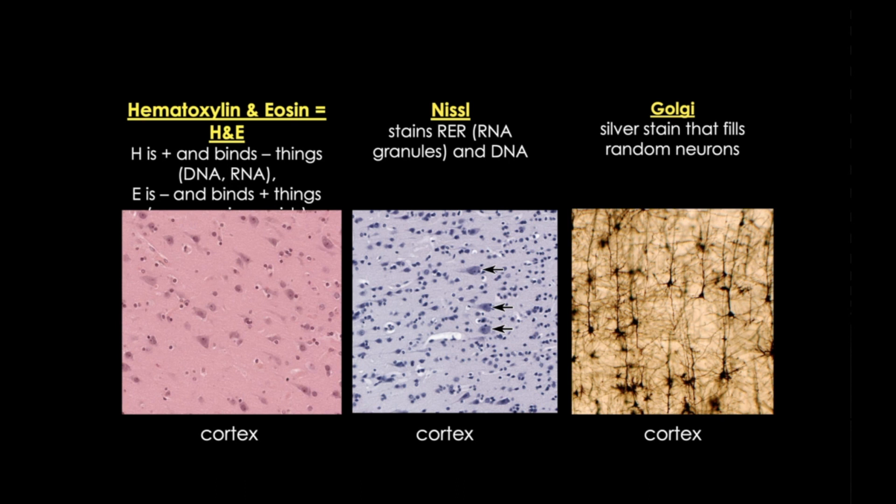In today's neuroscience laboratories, these stains are still used, but more commonly, researchers will use antibodies to specific proteins or neurotransmitters, or GFP tracers, to visualize neurons.